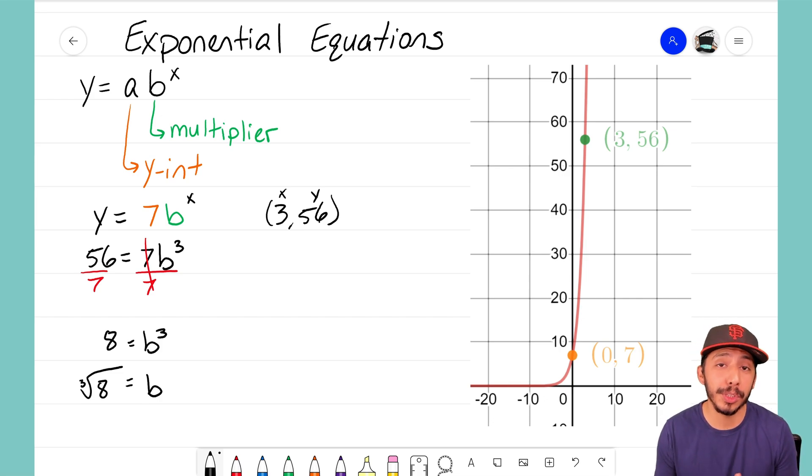You might be familiar with square root - we use square root when that exponent here is a 2, but that exponent is not a 2, that exponent is a 3. So we're going to need to take the cube root of 8 to figure out what that B term is.